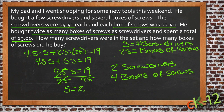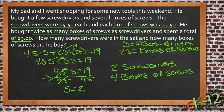Tom, I think that works just fine. You have one step where you distribute and combine like terms, and the next step requires division. So I would say that actually qualifies as at least three steps — the distribution, then the addition, then the division. And you could even call the last step, where we take the 2 and substitute it in for 2s to figure out how many boxes of screws, another step as well. So yeah, I think that works very well. Nice job.